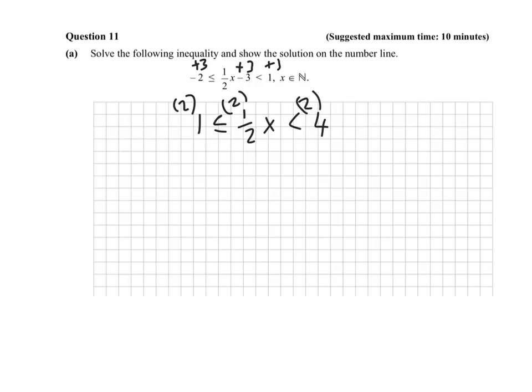So we end up with 2 on the left-hand side, less than or equal to x, because it's 1x is x, less than 8. This is basically telling us that 2 is less than or equal to x, which in turn is less than 8. So in other words, x is between 2 and 8, but it can't be equal to 8 because there's no equal to here.